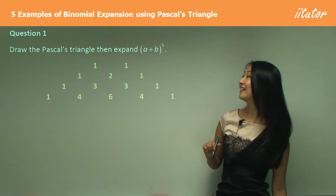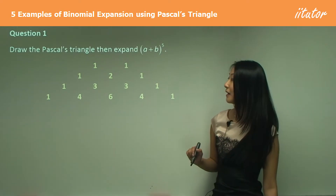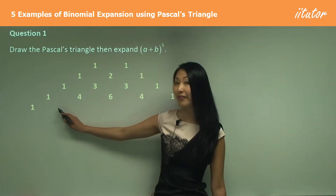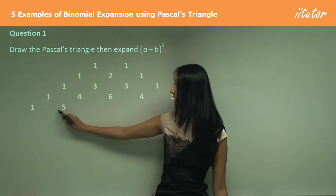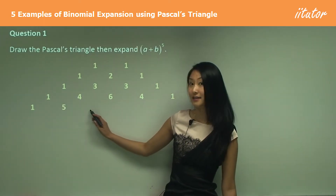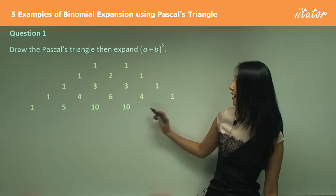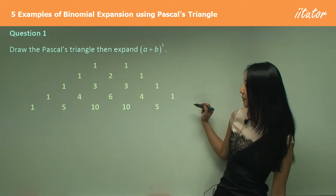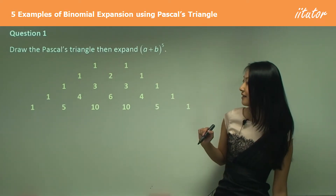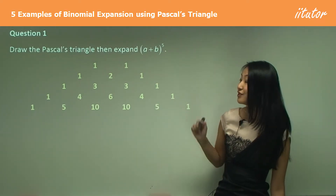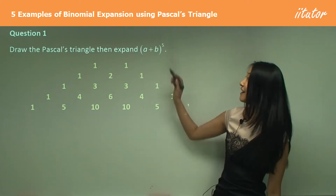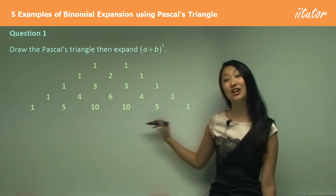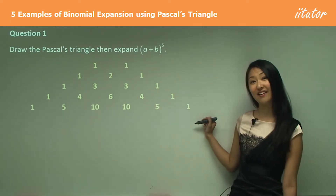Excellent. Now what's the fifth line going to be? It starts off with 1, then 5, 10, 10, 5, and 1. So you can see that for the power of five, there are going to be six terms altogether.